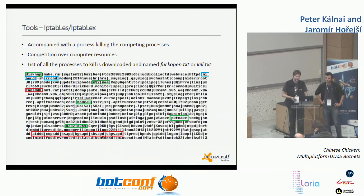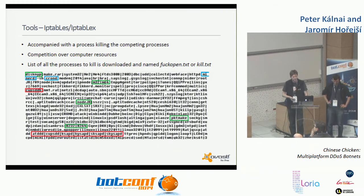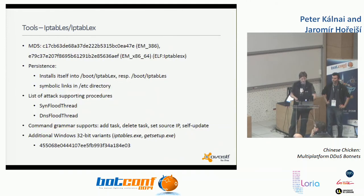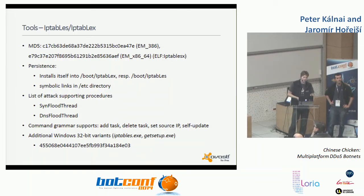IPtable SX comes with an extensive list of processes to kill, grouped by color: green for Elknot-related, red for Bill Gates, and blue for general processes like miners. It achieves persistence in the boot directory, supports SynFlood and DNSFlood methods, has a self-update ability, and the 32-bit Windows variant typically comes with filenames iptables.exe or getsetup.exe.